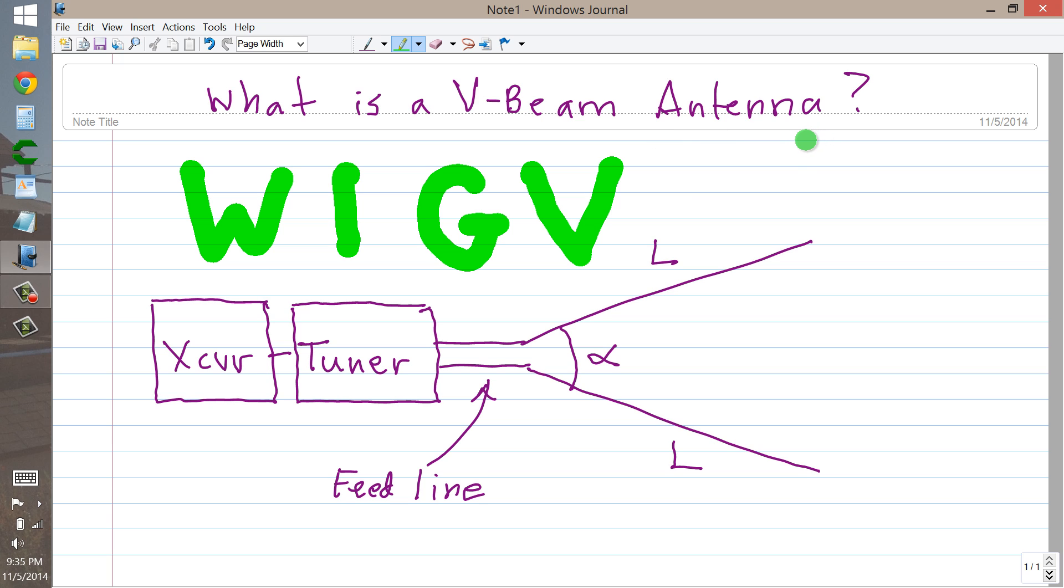If you've heard of a rhombic, you've probably also heard of a V-beam because a V-beam is just a rhombic antenna with the second half cut off, basically two long wire antennas of length L in wavelengths.